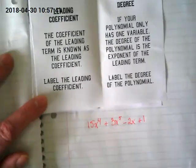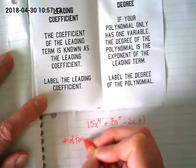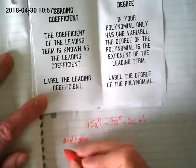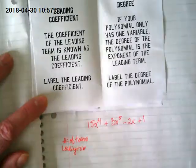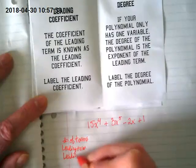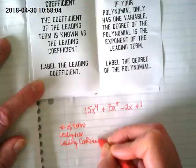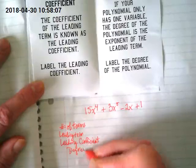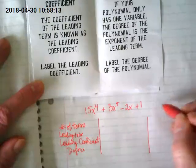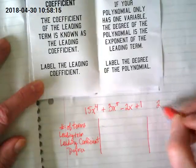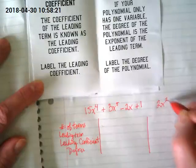I want you guys to create like a table on the left side. We're going to put number of terms, leading term, leading coefficient, and the degree. We're going to do this for two different polynomials. The second one is 2x to the second power minus 5.